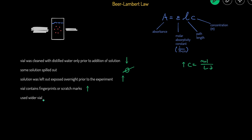Lastly, if you use a wider vial, that affects the path length. As path length increases, absorbance will also increase.